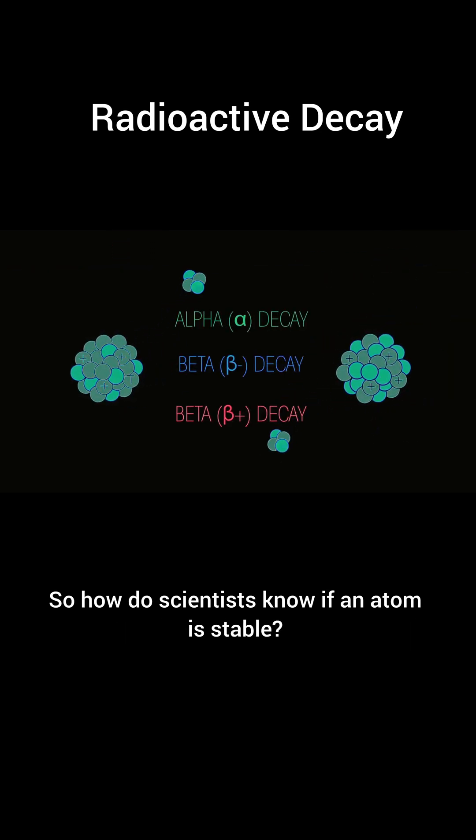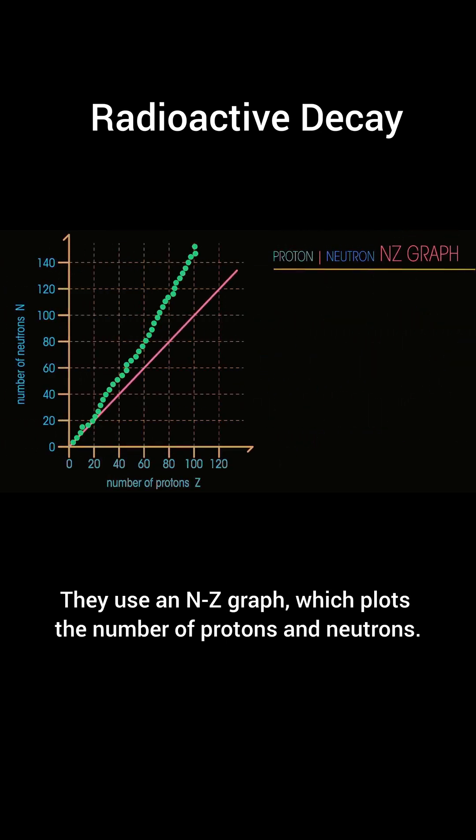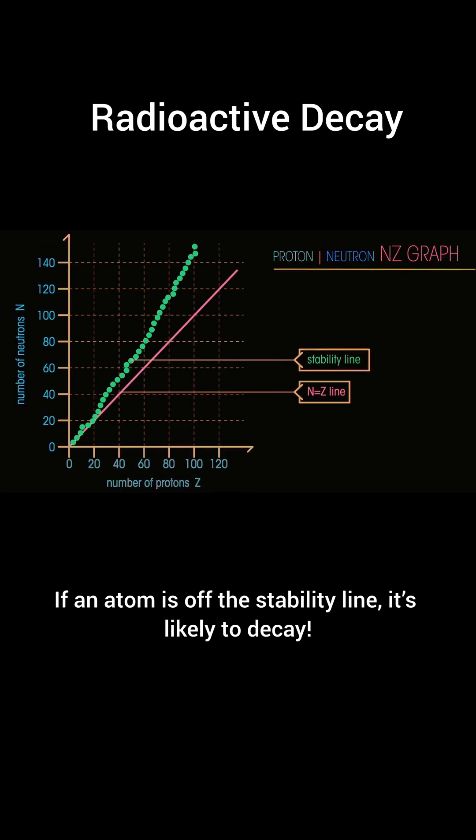So how do scientists know if an atom is stable? They use an N-Z graph, which plots the number of protons and neutrons. If an atom is off the stability line, it's likely to decay.